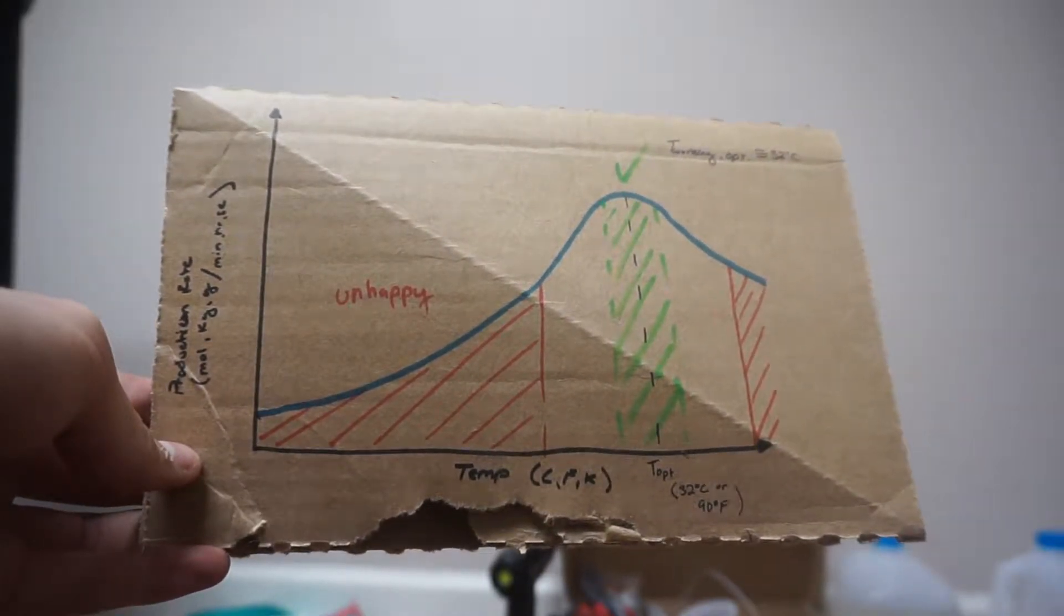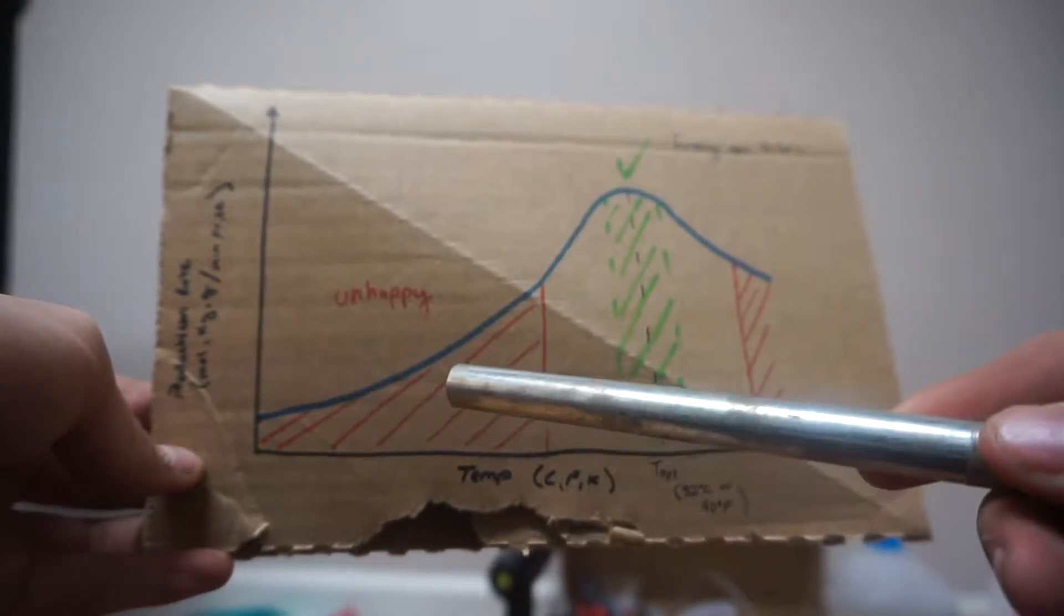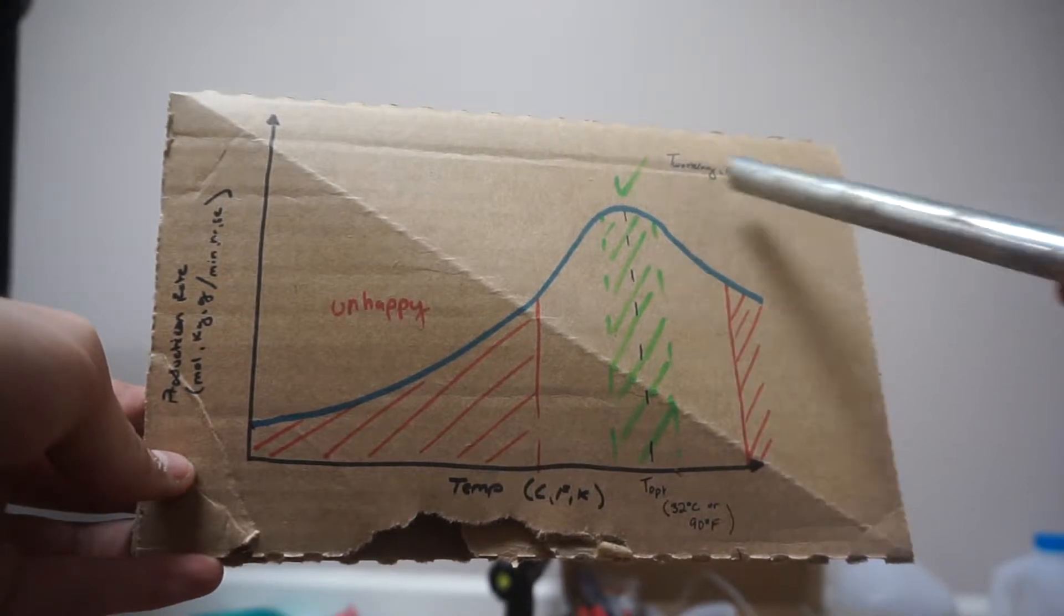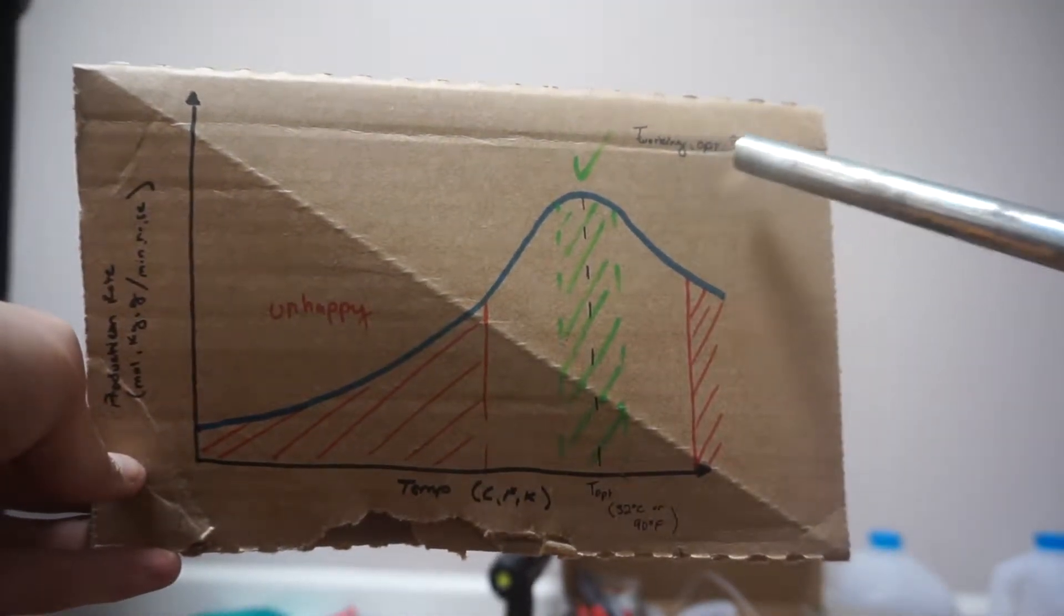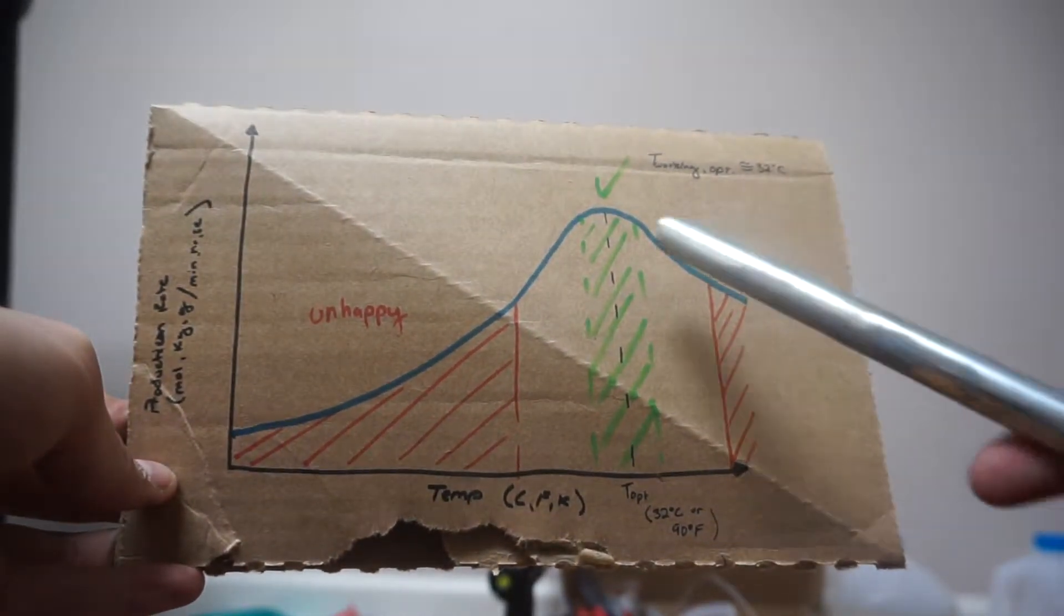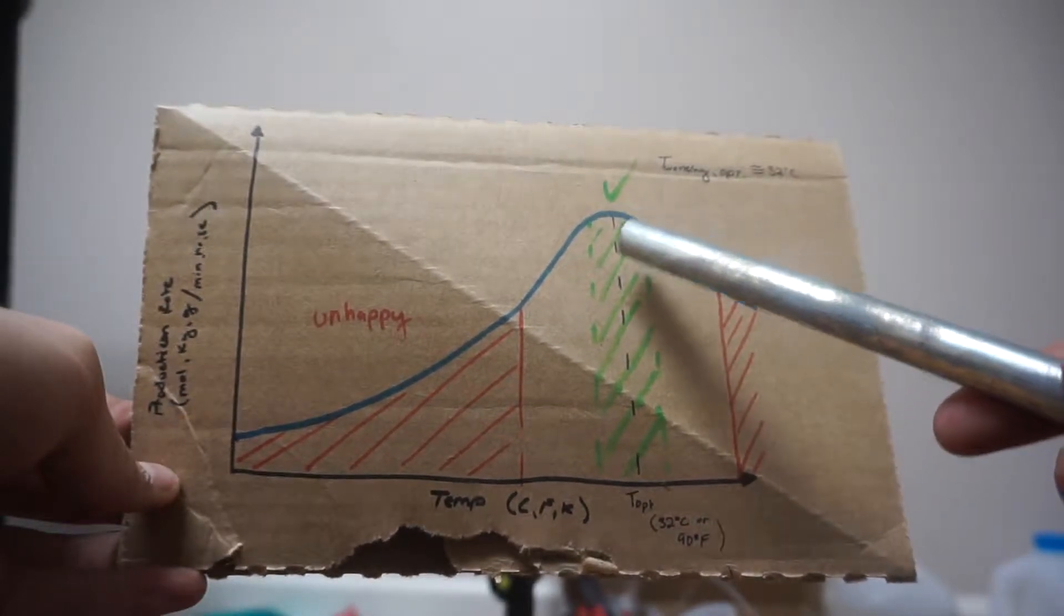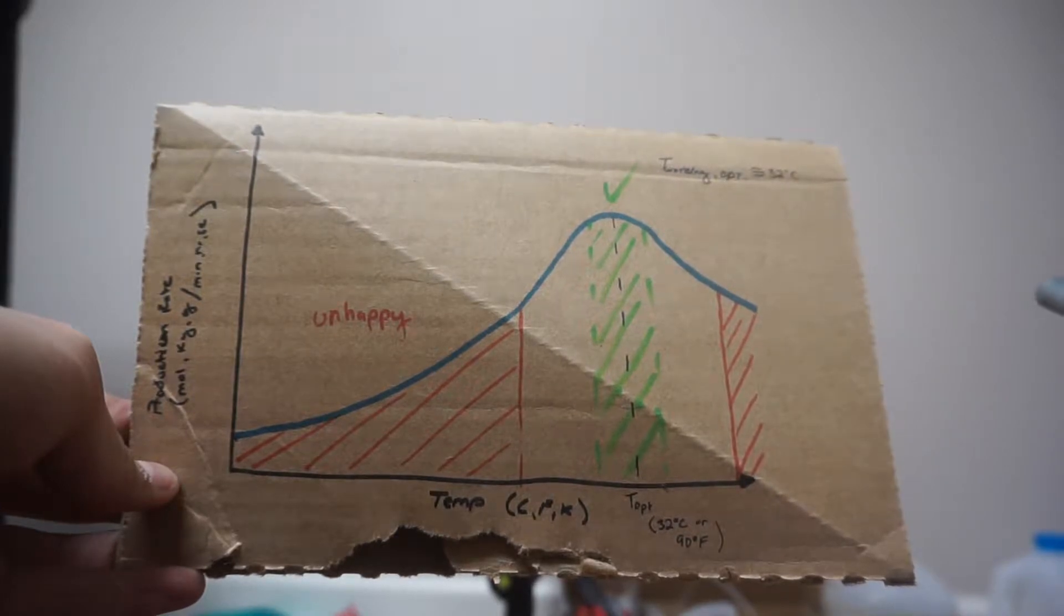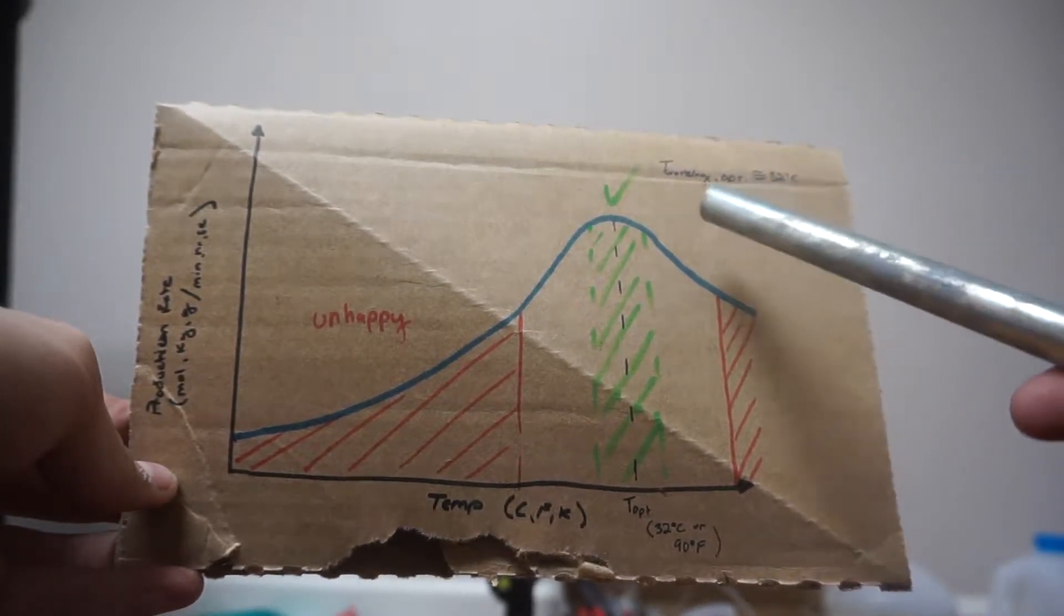If you plot the productivity of alcohol that the yeast is producing over a range of temperatures, you find that there's a sweet spot right around 32 degrees Celsius. Our working temperature optimum is about 32 degrees C, and anywhere within that, because of the nature of a maximum, we're not going to lose too much productivity for a relatively large change in temperature.